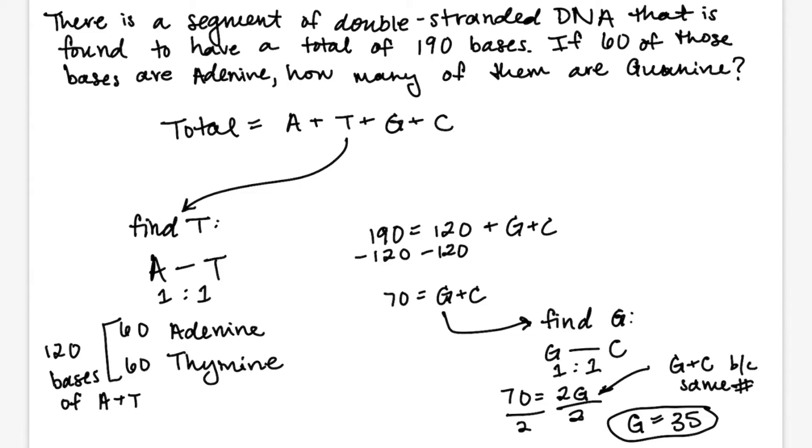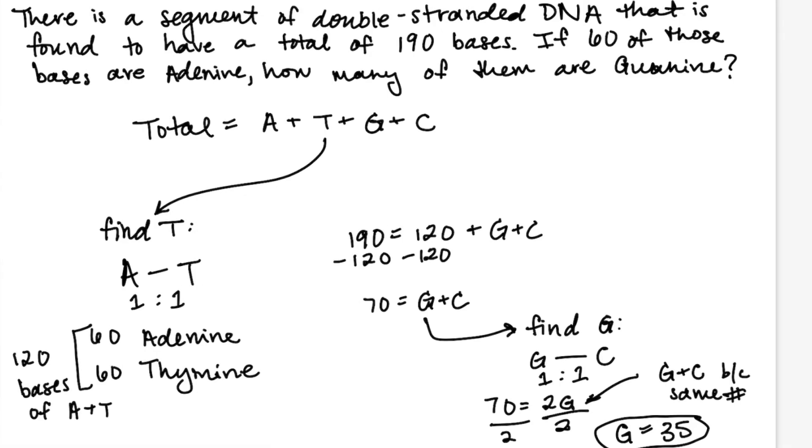There are a couple things I want to point out about this problem. First, this question is asking about a piece of double-stranded DNA. If this question were asking about a segment of single-stranded DNA or a piece of single-stranded RNA, we would not be able to complete this question because we don't have sufficient information about the complementary pairing. Because of this, we would not be able to determine the amount of thymine and therefore the amount of guanine.